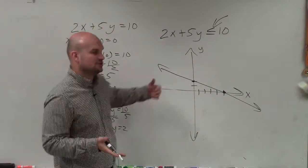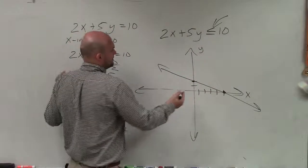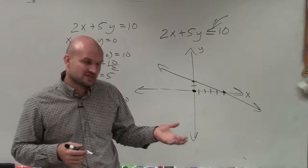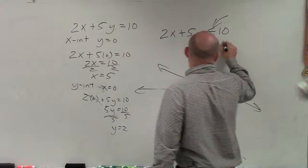Now we need to determine, what about the shading? What about the points below or above? Are those going to be true or not? So we need to use a test point. And the best test point to use, as long as your line doesn't go through it, is 0, 0. So now, I'm simply just going to plug 0 in for x and 0 in for y.